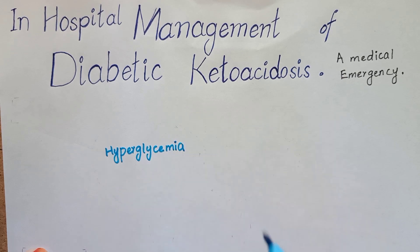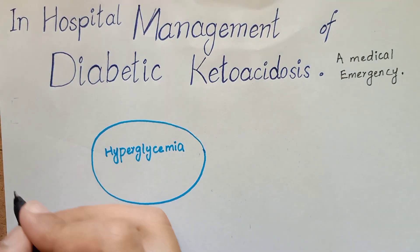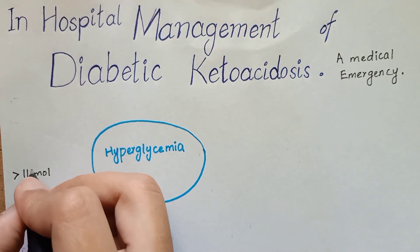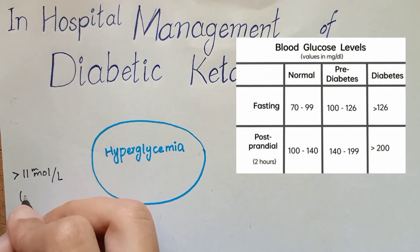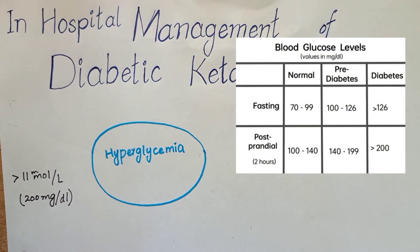The first feature is hyperglycemia of more than 11 millimole per liter, which is approximately 200 milligram per deciliter.